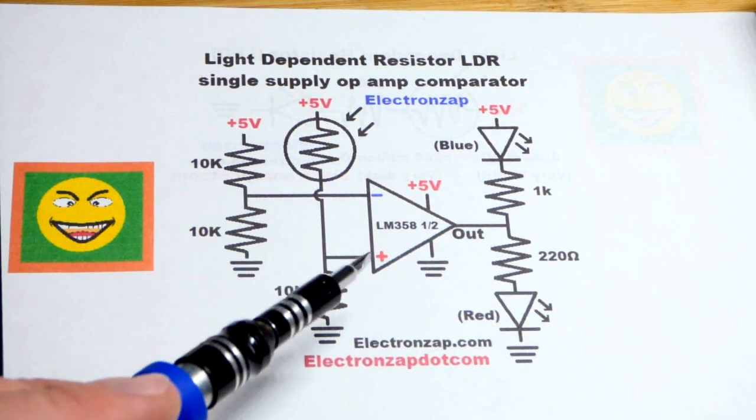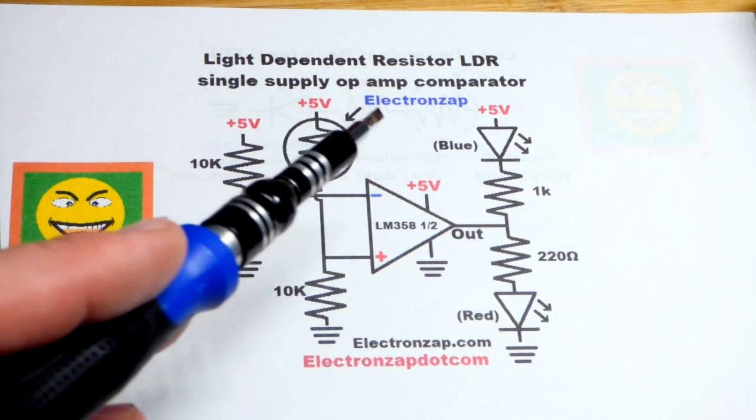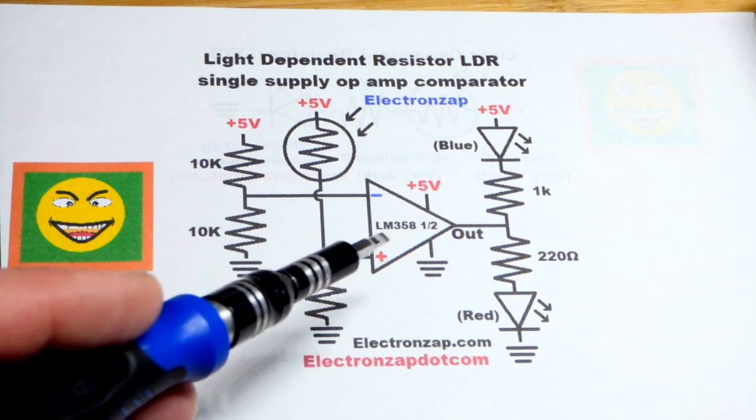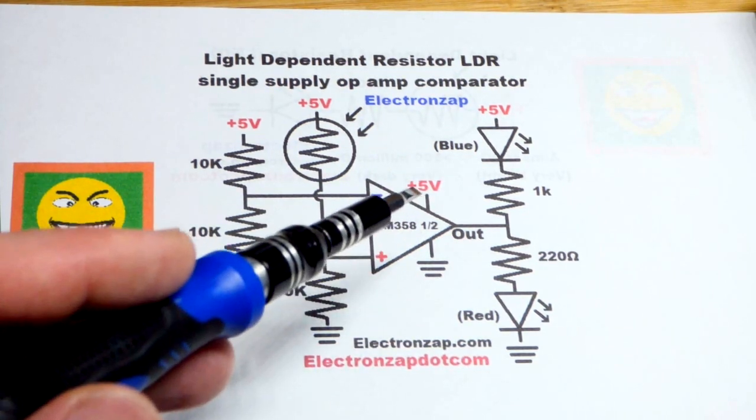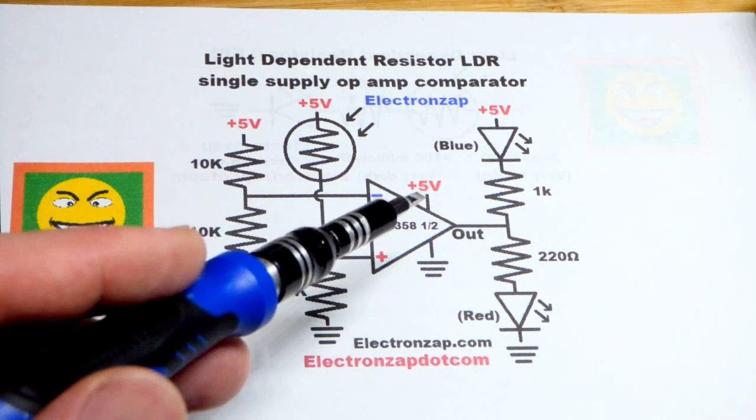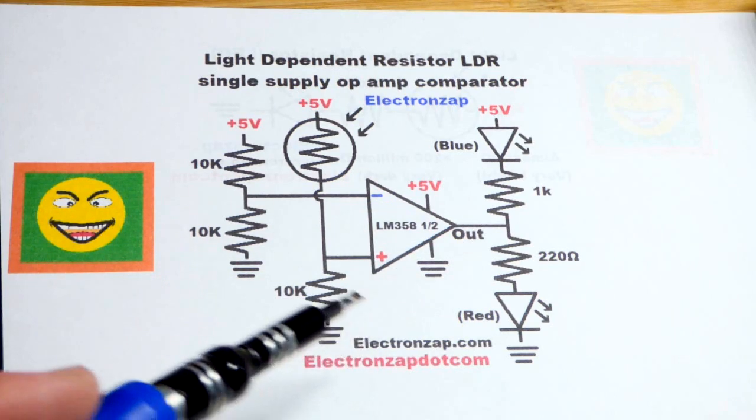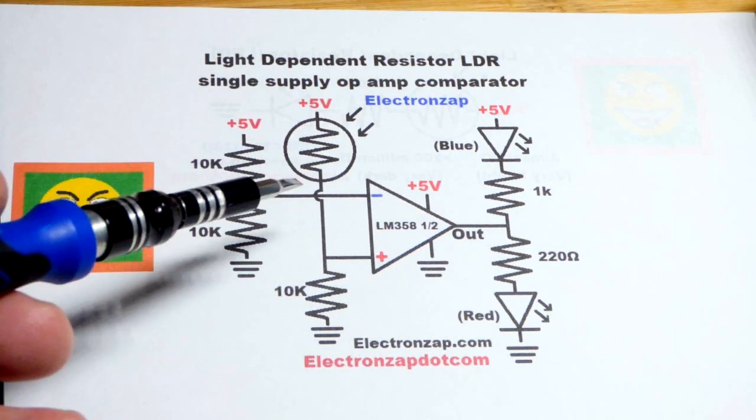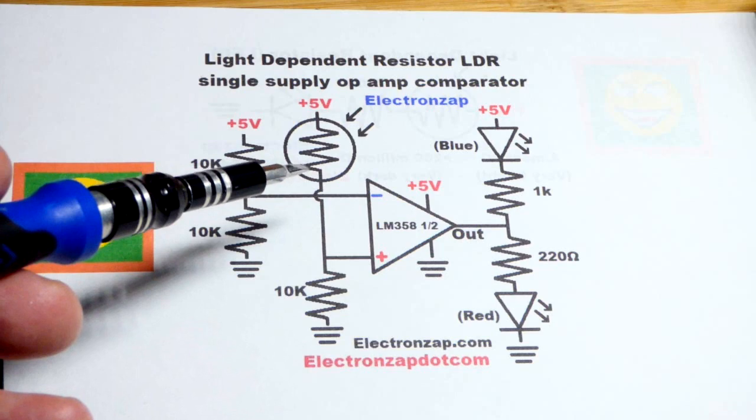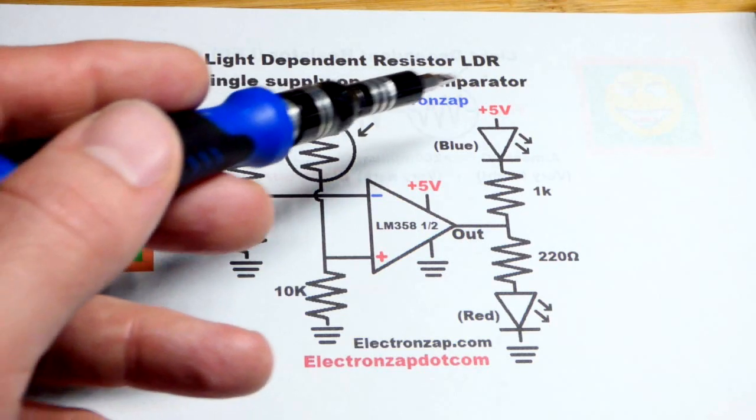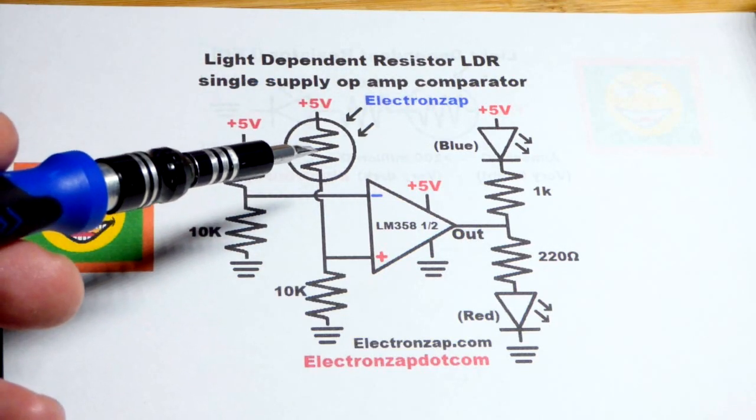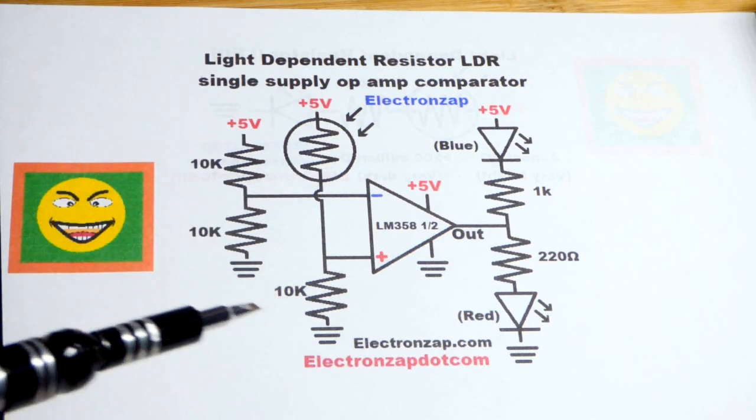In this video, we're going to come back to the single supply op-amp comparator. We're going to use the LM358, which works with single supply. We got 5 volts across the two power terminals. We're going to take the component from the last video, the light-dependent resistor. Its resistance changes based on how much light is falling on it.